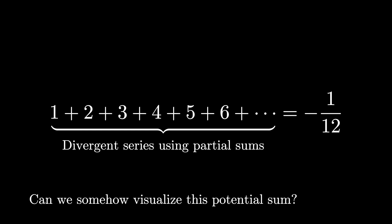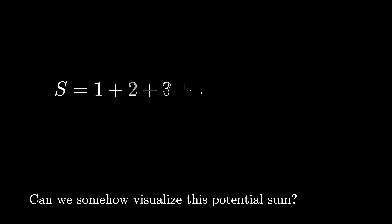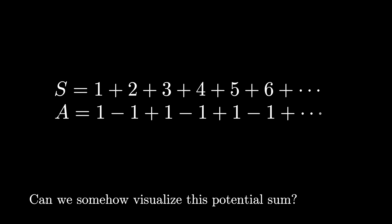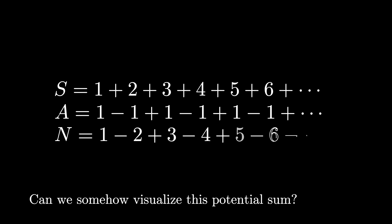In order to do this, we're going to need to investigate three different values. S is going to be the infinite sum of the positive integers. A is going to be the alternating sum 1 minus 1 plus 1 minus 1 and so on. And N is going to be the alternating sum of positive integers: 1 minus 2 plus 3 minus 4 and so on.